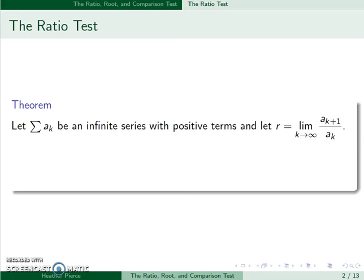So we'll start with the ratio test. This says if we have an infinite series with positive terms, we'll let r be the limit as k goes to infinity of a sub k plus 1 over a sub k.